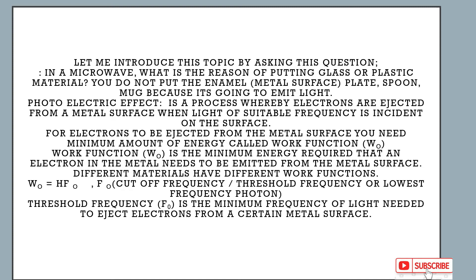Therefore, the photoelectric effect is a process whereby electrons are ejected from a metal surface when light of suitable frequency is incident on the surface — meaning it goes through the surface. For electrons to be ejected from the metal surface, you need a minimum amount of energy called the work function, denoted by capital W with subscript zero.